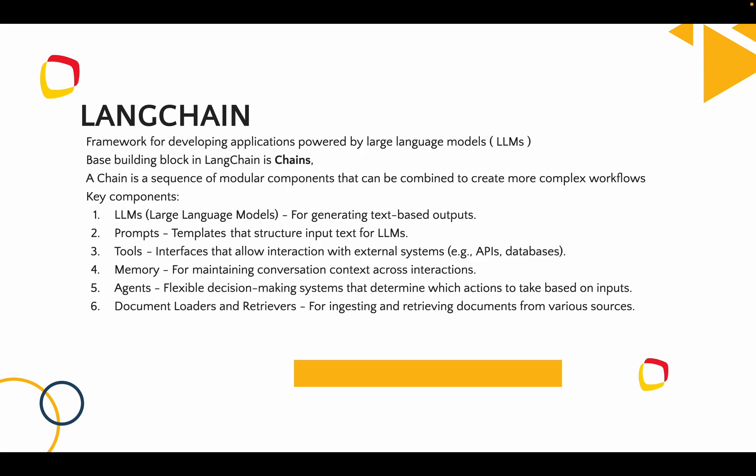LangChain's key components include LLMs, prompts, tools, memory, agents, document loaders, and retrievers. At a high level: LLMs are for generating text-based output; prompts are templates that structure input text to the LLM; tools help the LLM interact with the outside world through APIs or databases; memory maintains conversation context across interactions; agents automatically make decisions based on input; and document loaders and retrievers inject and retrieve documents from various sources.